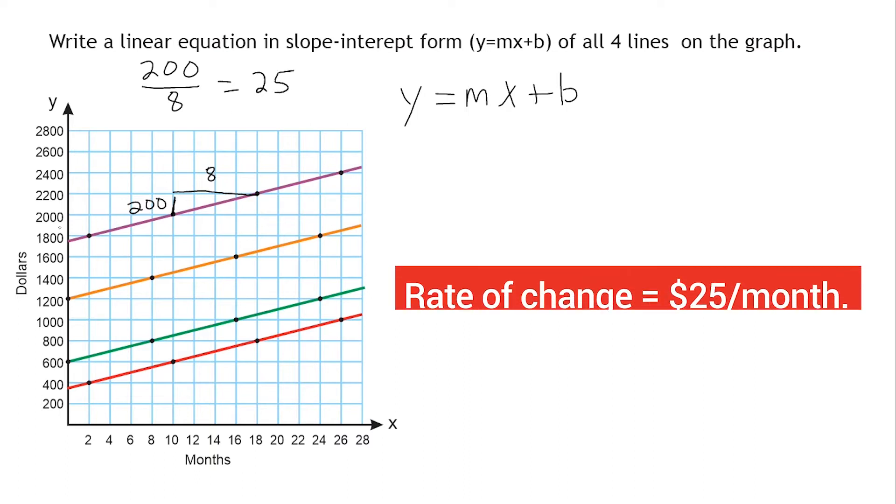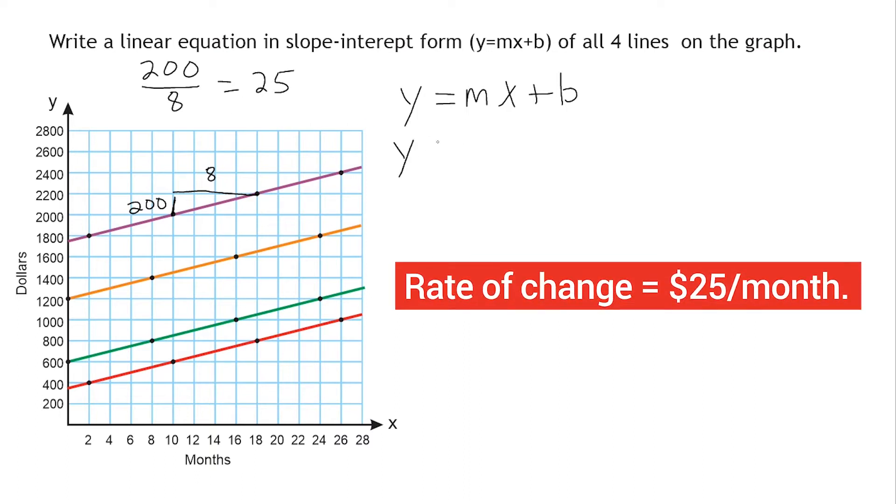So the slope of this purple line is 25. So let's go ahead and substitute m, or the slope, with 25.